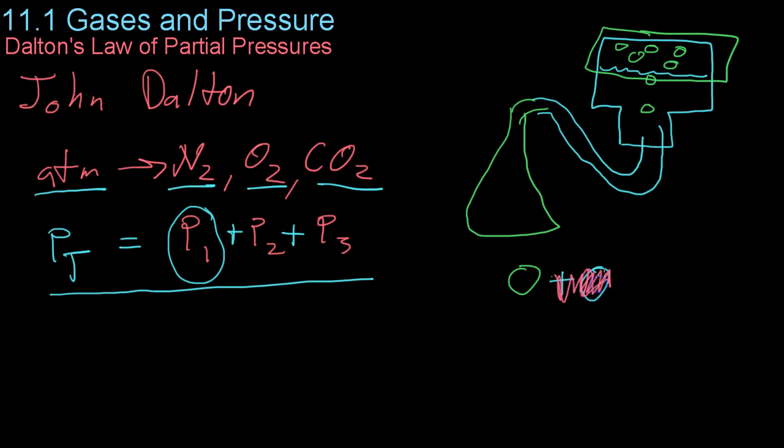So what you would do is you would take the total pressure, which would be atmospheric pressure, if you were to set this in a pool of water where the water was at equal height, and then you would subtract, or first you would take the total and set it up so that you have the pressure of gas X plus the pressure from the water vapor.